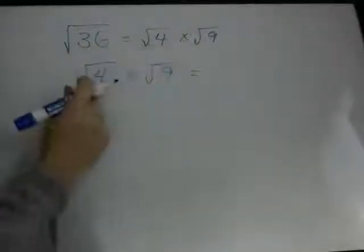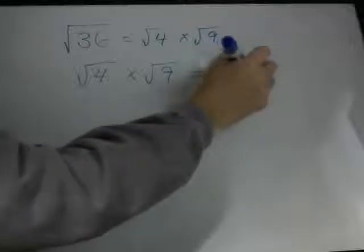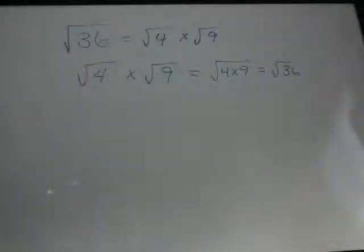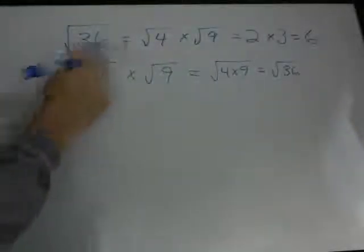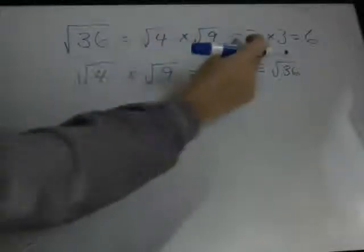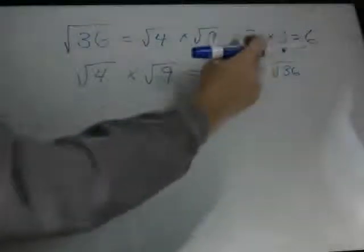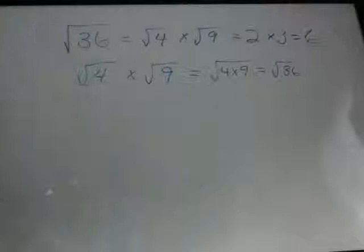So if you have the equation square root of 4 times the square root of 9, you can combine them and say 4 times 9 is the square root of 36. Working backwards, if you have the square root of 36 but don't know it offhand, you know that 4 times 9 equals 36, the square root of 4 is 2, and the square root of 9 is 3. So 2 times 3 is 6. We broke it down into the square root of 4 times the square root of 9, and 2 times 3 equals 6 — so the square root of 36 is 6.